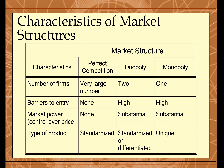Duopoly is a related structure that sits between oligopoly and monopoly on the spectrum — it's when two firms control all of the market.